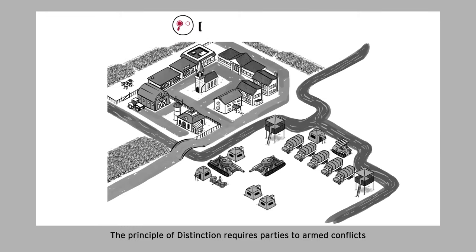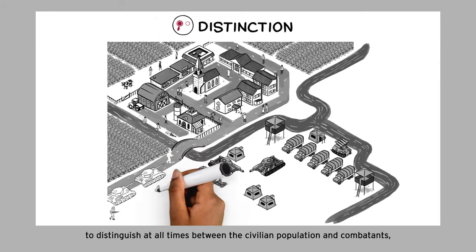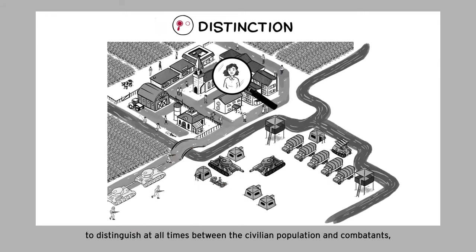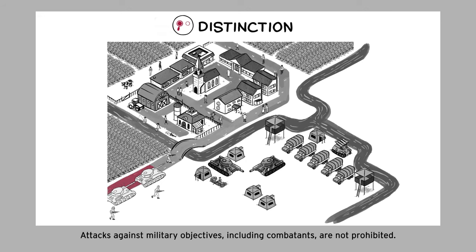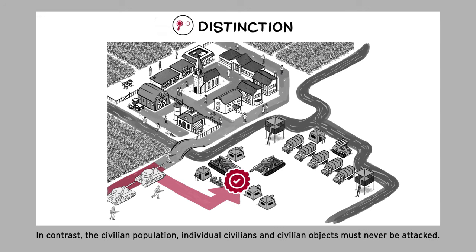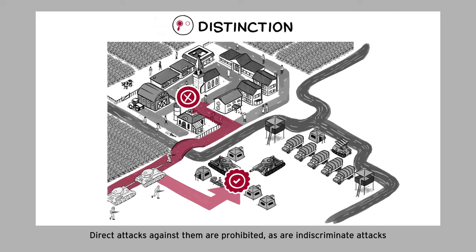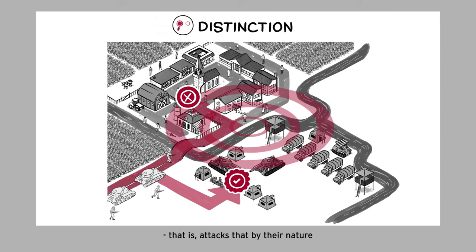The principle of distinction requires parties to armed conflicts to distinguish at all times between the civilian population and combatants, and between civilian objects and military objectives. Attacks against military objectives, including combatants, are not prohibited. In contrast, the civilian population, individual civilians, and civilian objects must never be attacked. Direct attacks against them are prohibited, as are indiscriminate attacks — that is, attacks that by their nature strike military objectives and civilians or civilian objects without distinction.